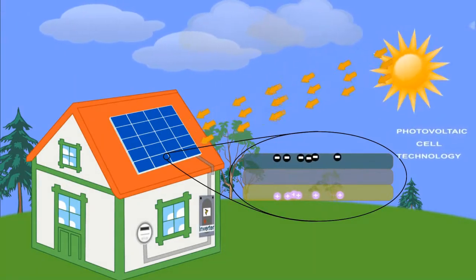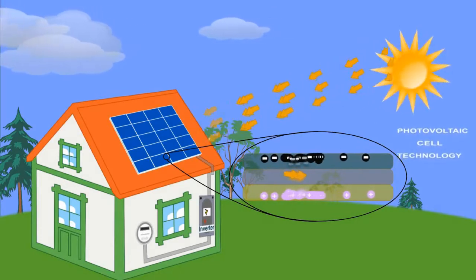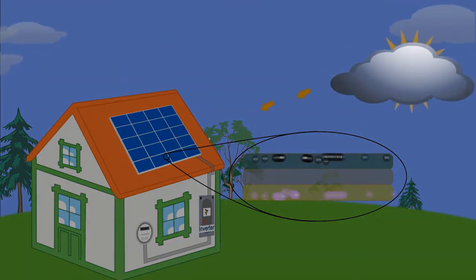The amount of electricity generated depends on the intensity of the sun, but even on cloudy days, your solar panels will still absorb sunlight and generate energy.